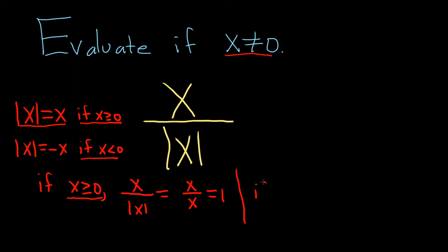The other case is if x is less than 0. So in this case, the absolute value of x is equal to negative x. So we get x over negative x on the bottom. That's going to give us negative 1.